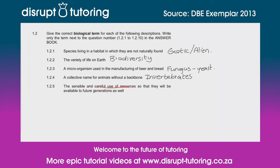1.2.5 — the sensible and careful use of resources so that they will be available to future generations as well. That is known as sustainable use of resources, or sustainability. And that's it, guys — I hope that helped!